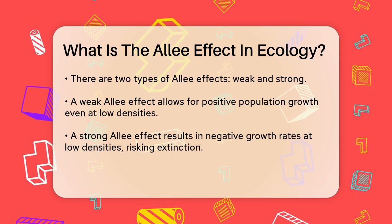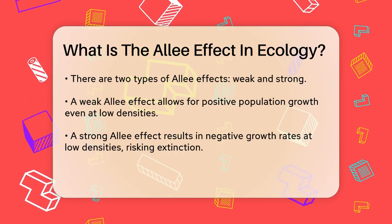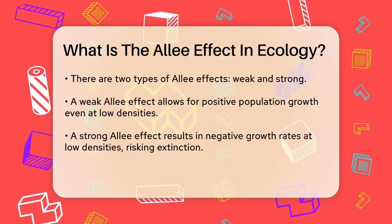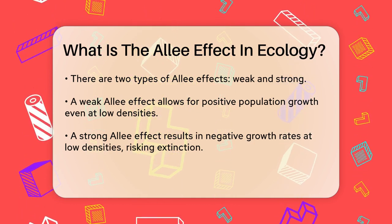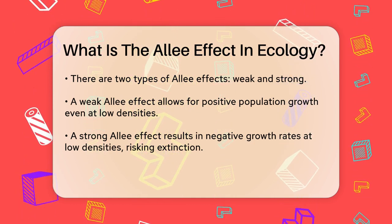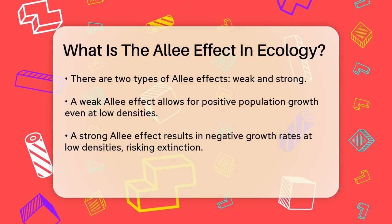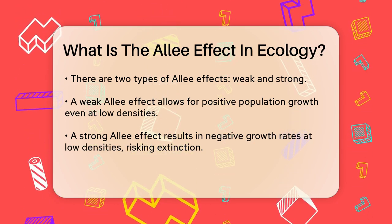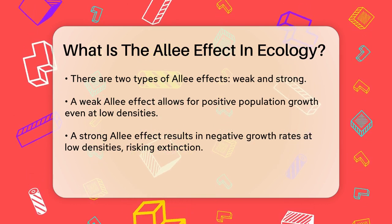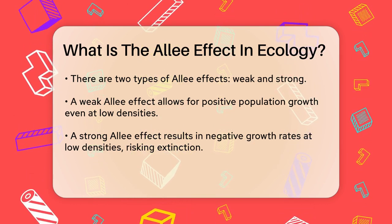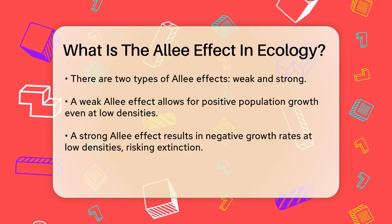There are two main types of Allee effects: weak and strong. A weak Allee effect occurs when the population growth rate increases with density but remains positive even at low densities. On the other hand, a strong Allee effect happens when the population growth rate becomes negative at low densities, meaning the population will decline and possibly go extinct if it falls below a certain threshold.